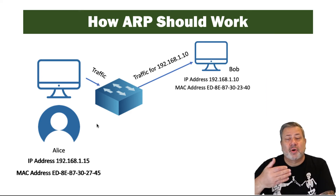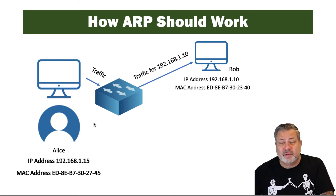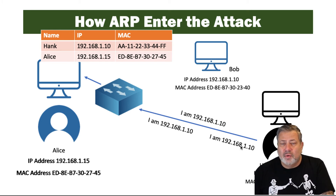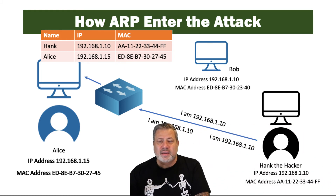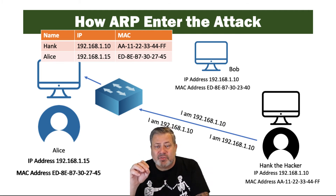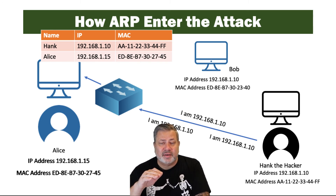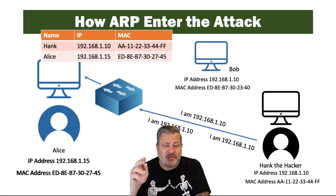Traffic goes from Alice's computer through the switch to Bob's computer because it's routed correctly. But what an attacker can do is get on the network and continually broadcast that they are 192.168.1.10 instead of Bob. So Hank can get on the network and just continually broadcast to the switch that he is actually that IP address. Because the switch doesn't have a lot of security built in, the ARP table will be overwritten. The switch now believes that 192.168.1.10 is actually Hank's computer at the MAC address ending with 44-FF in hexadecimal.